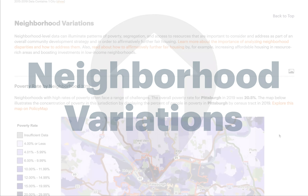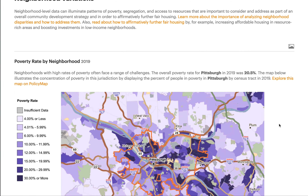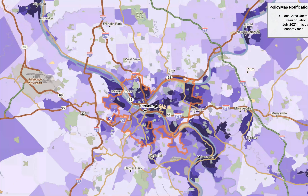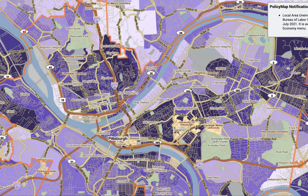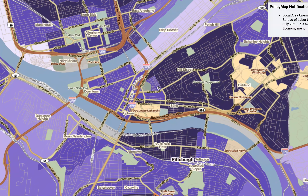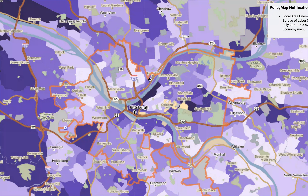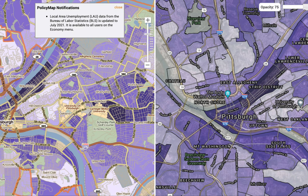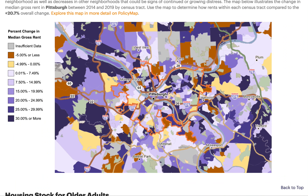While earlier sections focus on comparing city-level data to metro, state, and national trends, the neighborhood variations section uses neighborhood-level data to illuminate patterns of poverty, segregation, and access to resources — important considerations for an overall community development strategy and to affirmatively further fair housing. Utilizing maps created by and available on PolicyMap, this section includes interactive maps that can help you answer key questions.